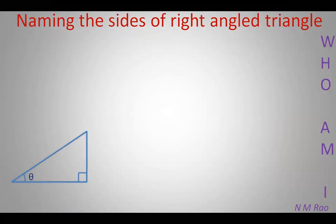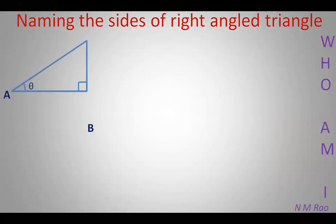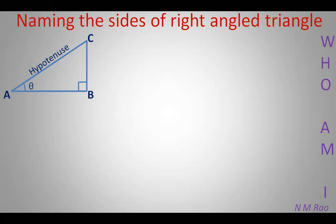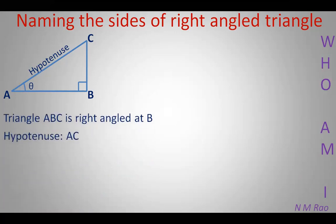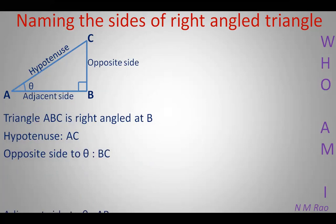Now let us name the sides of a right angle triangle. Take triangle ABC right angled at B. The side opposite to the right angle, AC, is the hypotenuse — it is the most important side. Now name the angle BAC with the Greek letter theta. The side BC is opposite to angle theta, so the opposite side to theta is BC. And the remaining side AB is the adjacent side. We can also describe the adjacent side as the side close to theta other than the hypotenuse.